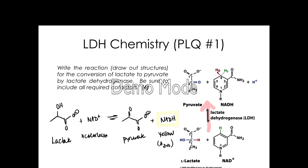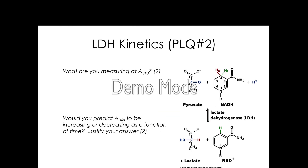We'll be able to measure the absorbance at 340 for NADH. For the first pre-lab question, it's pretty straightforward — just identifying the chemistry that's happening. The second question asks us to think about what are we measuring at A340.